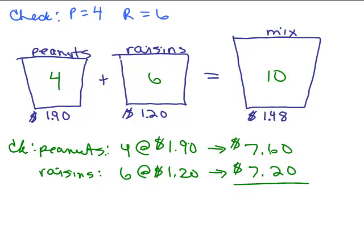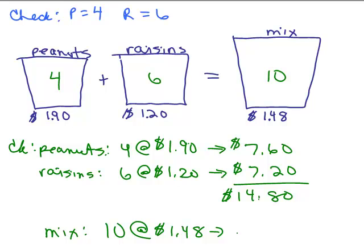He would have spent $7.60 for 4 pounds of peanuts, and $7.20 if he bought 6 pounds of raisins. So his total amount that he would be spending is $14.80. So the question is, what if he had just bought the entire mixture, all 10 pounds at this in-between price of $1.48 per pound? Well, what's 10 times $1.48? That's $14.80. So that's what we're checking, we're making sure that does come out to the same cost or price. So our answer here then is correct.